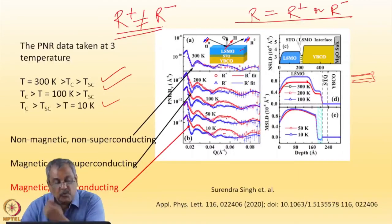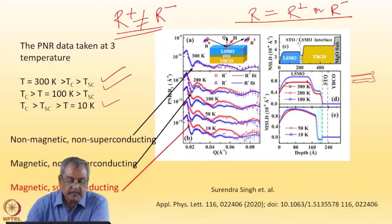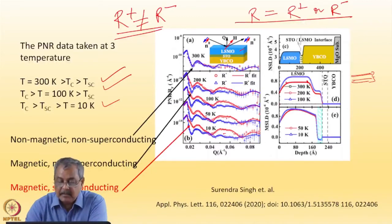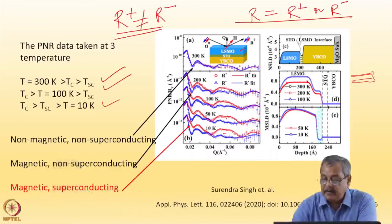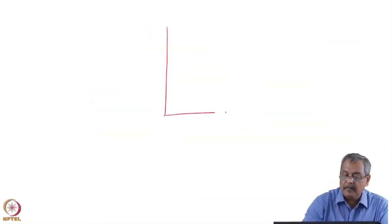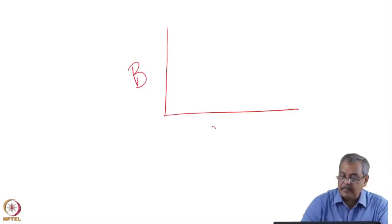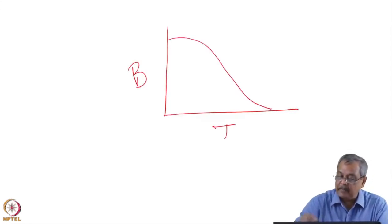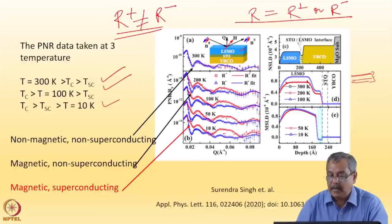Now, when we go to 10 K, the ferromagnetic LSMO is at a tunneling junction from a superconducting YBCO. What happens? One interesting thing is that when we reduce the temperature, if we plot magnetization versus temperature, we have got a plot like this. As you go down in temperature, magnetization increases. And that's what we find.